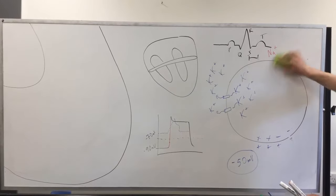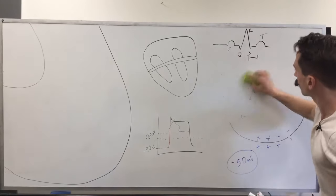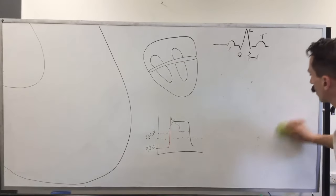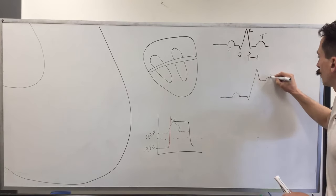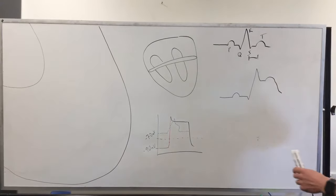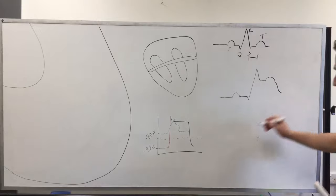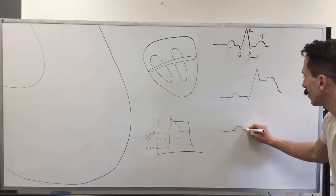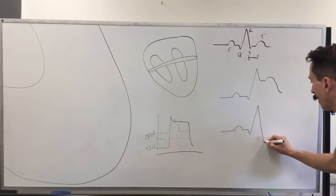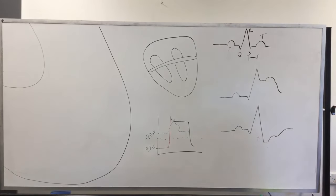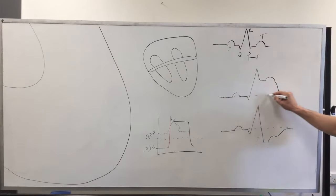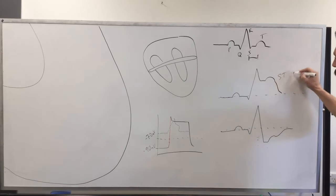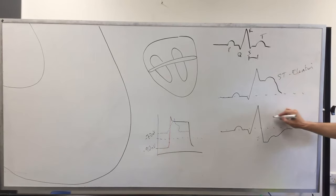It looks a little bit like this. That's the ST elevation. In other cases, you can sometimes get an ST depression. So we have the isoelectric point, and you can see ST elevation and ST depression.